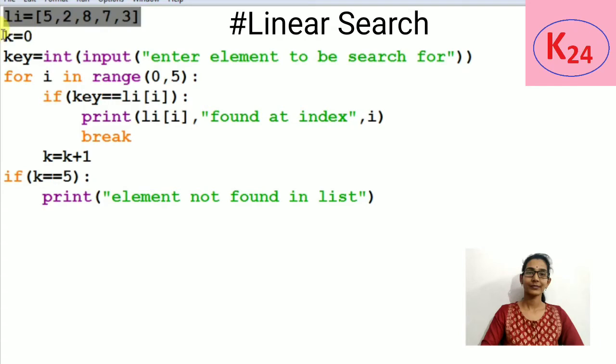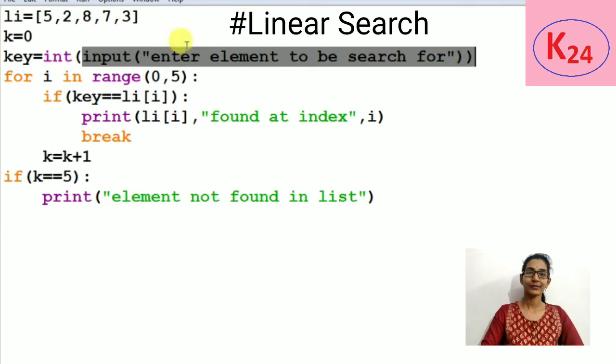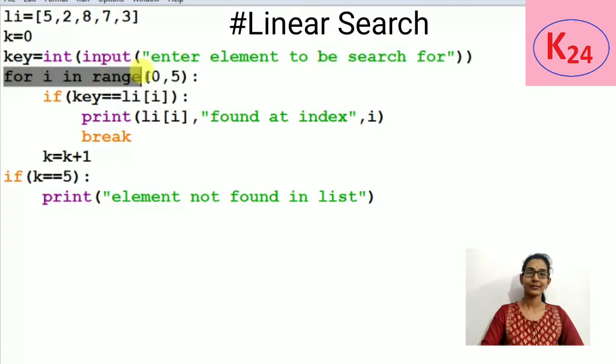Now we will take two variables k and key, and assign k equal to 0 and accept the element from the user which we want to search and assign it to the key variable. Now we execute a for loop for 0 to 5 range.